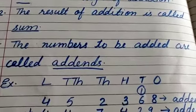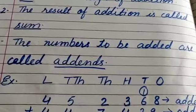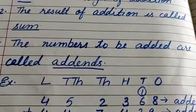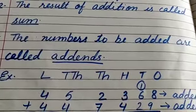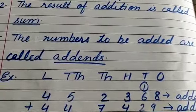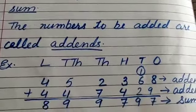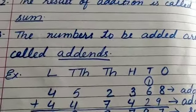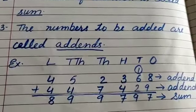The numbers to be added are called addends. Which numbers we add are called addends — which two numbers, which three numbers we add, we call addends. Means, jin jin numbero ko hum add karte hai, wo sare numbero ko hum addends bolte hai.